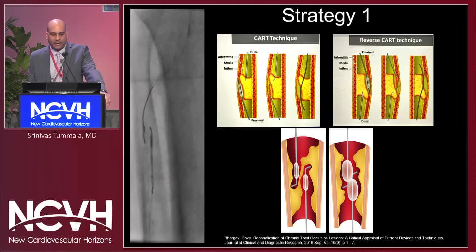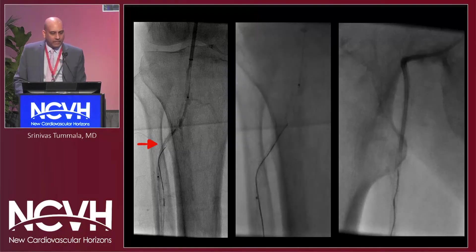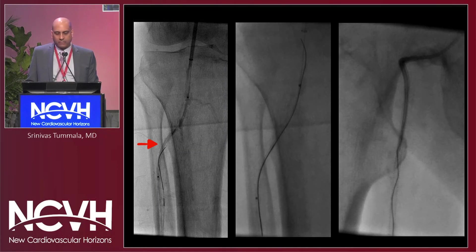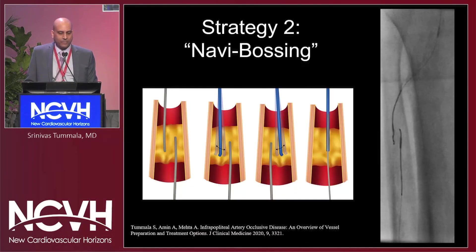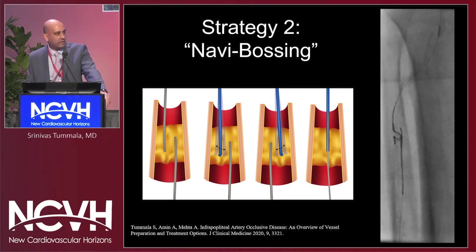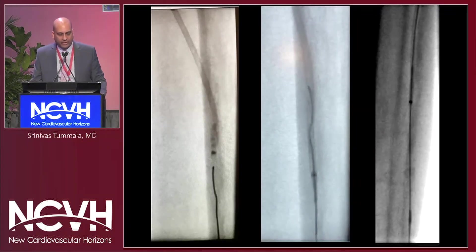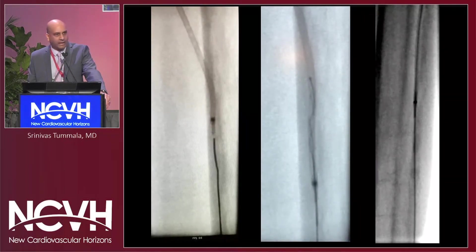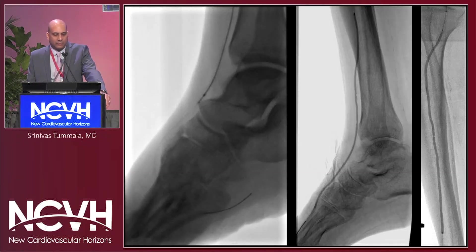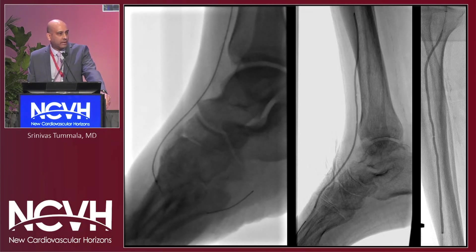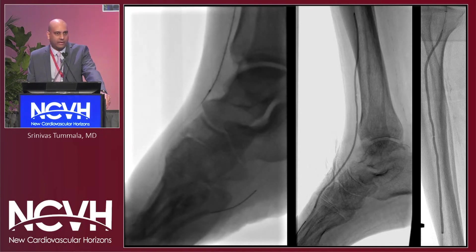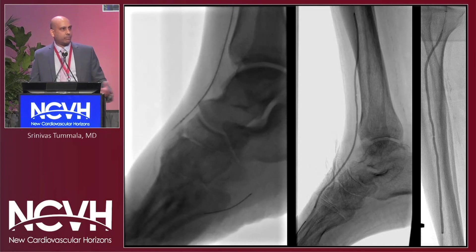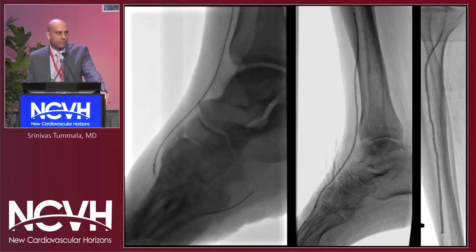My options at that point were CART, reverse CART, or double balloon. I did reverse CART to get through-and-through access and continued with the case. My other option was navi crossing — honestly, I learned this from Jihad and Fadi when I visited their center, and it's probably one of the best techniques I've ever learned during my career. Using a navi cross catheter, I disrupted the sub-intimal planes between the two catheter-guidewire systems to achieve through-and-through access. I had a lot of hibernating vessels below the ankle. I did orbital atherectomy due to the heavy calcification, which allowed me to do low-pressure, prolonged angioplasty in the tibial vessels and reduce my chance for dissection, perforation, and rupture.